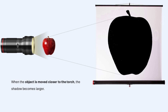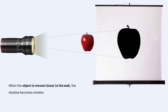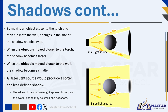When the object is moved closer to the torch, the shadow becomes larger. Conversely, when the object is moved closer to the wall, the shadow becomes smaller. Therefore, the size of a shadow depends on the distance between the object and the light source or wall. A larger light source would produce a softer and less defined shadow, with blurred edges and an overall shape that is not sharp.